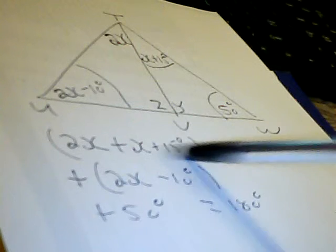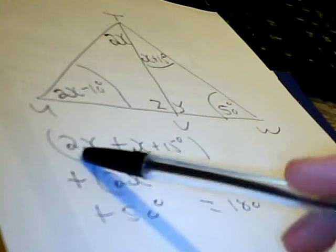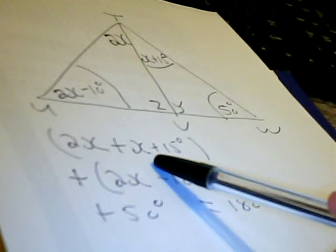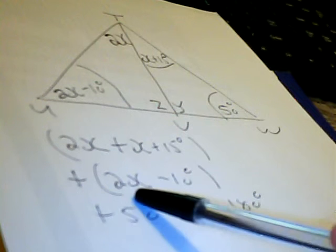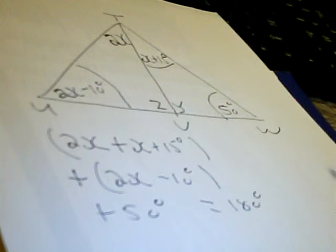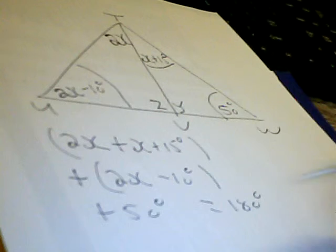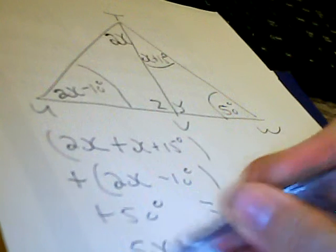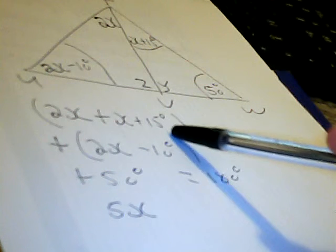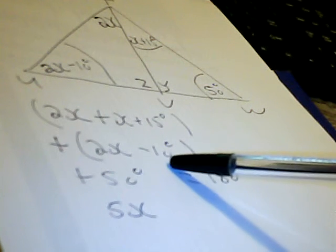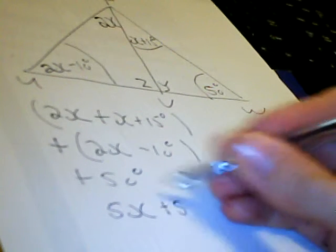We can simplify on the left hand side. We have 2X plus another X, so it's 3X, plus another 2X is 5X. Then we add the constants: we have 15 degrees minus 10 which gives us 5 degrees plus 50, so that's plus 55 degrees equals 180 degrees.